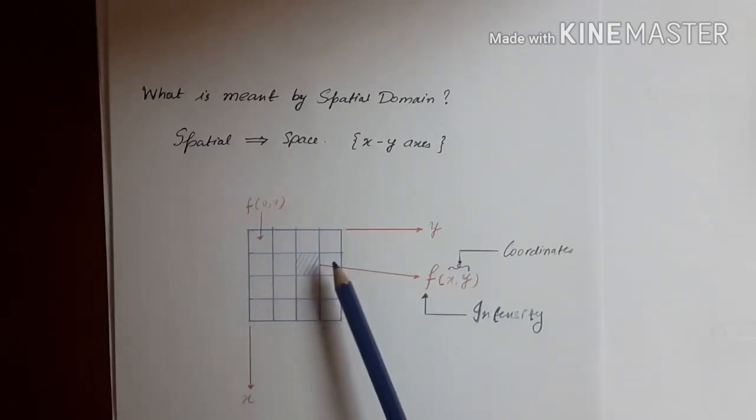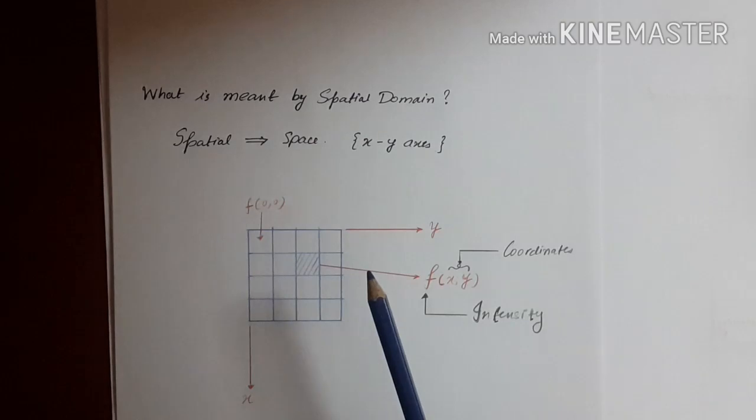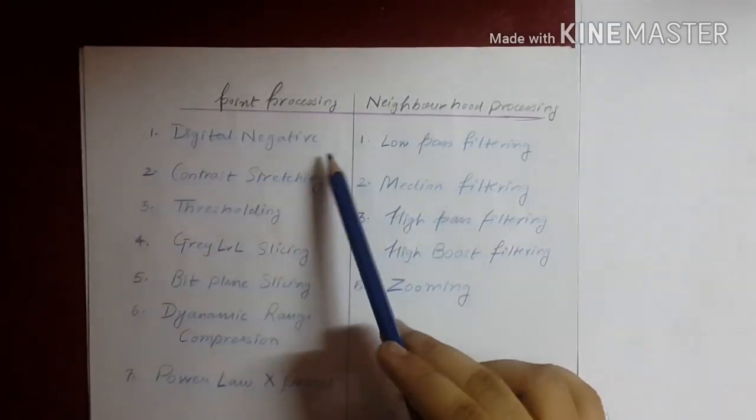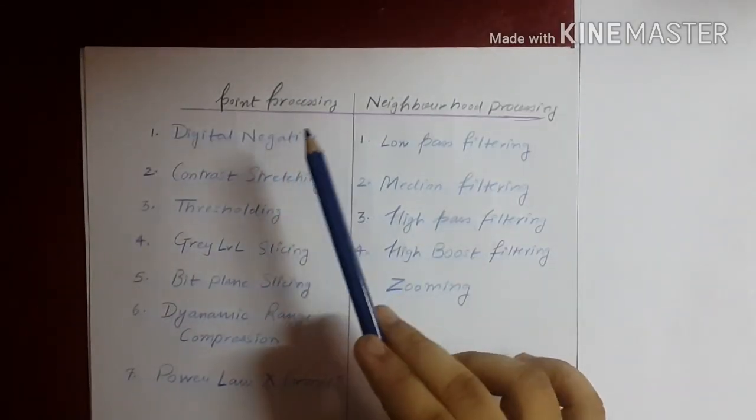We call it, or we may call it, a gray level depending on the type of image we are dealing with. The gray level depends on the number of gray levels in an image. The number of possible gray levels in an image depends on the bits per pixel. This table here shows the two main processes in spatial domain.